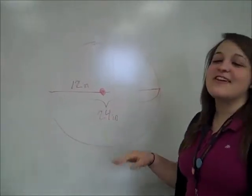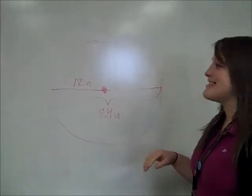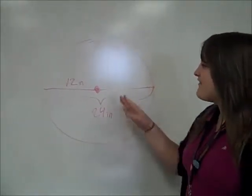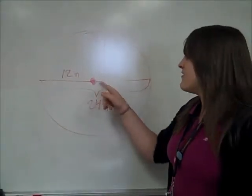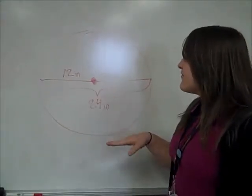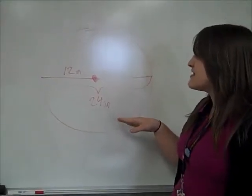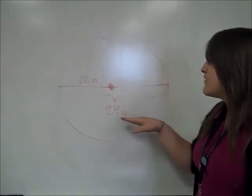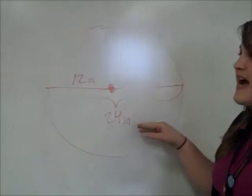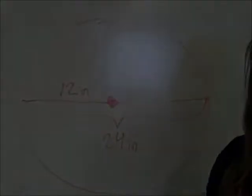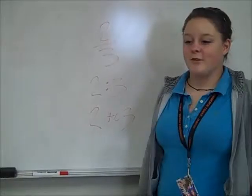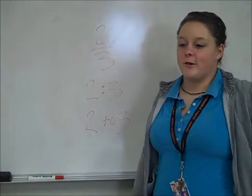I'm doing radius. One half of the diameter would equal the radius. For example, in this circle, 24 is the diameter and half of 24 is 12, so that would be the radius.